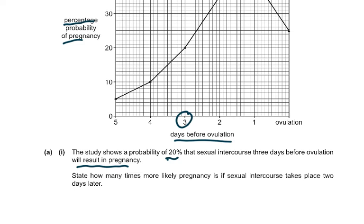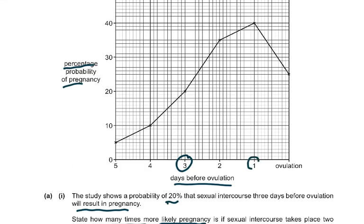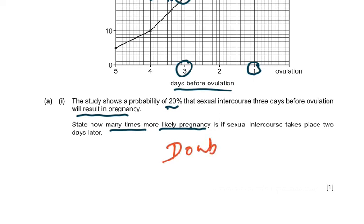How many times more likely is pregnancy if intercourse takes place two days later — meaning one day before ovulation? At one day before ovulation the probability is 40%, compared to 20% at three days before. This has doubled, so the answer is twice as likely. You get one mark for stating twice as likely or that it doubles.